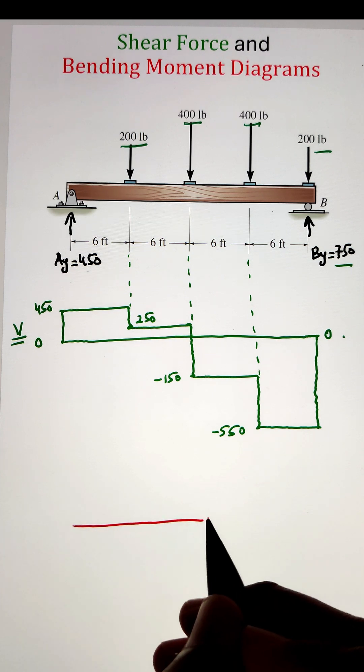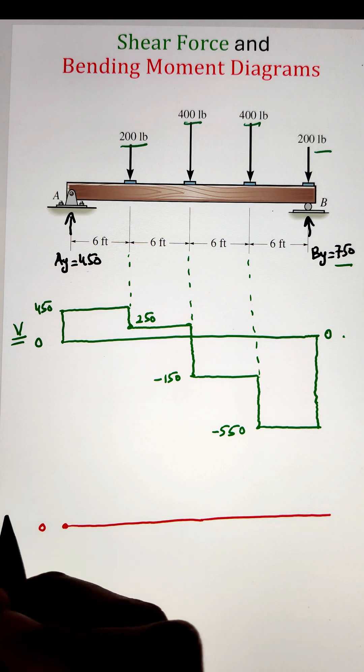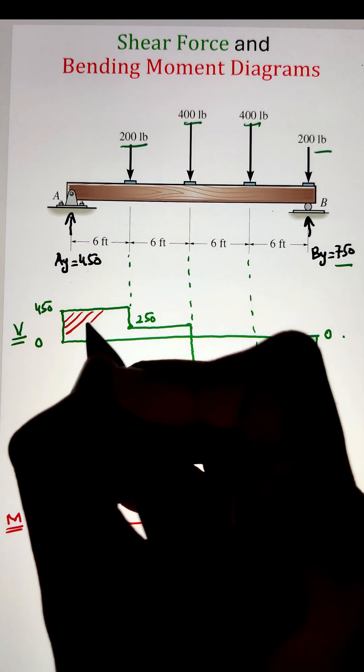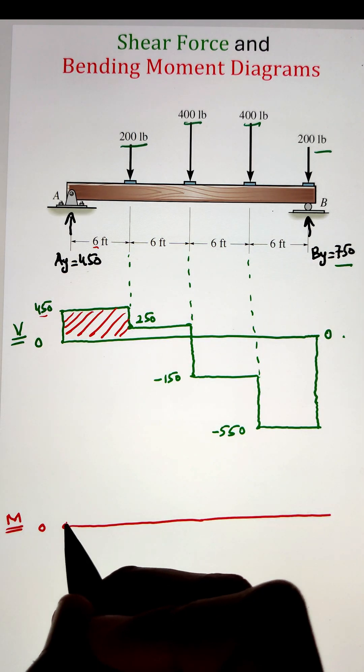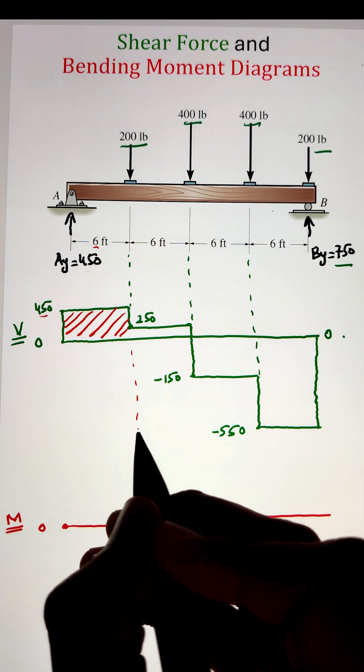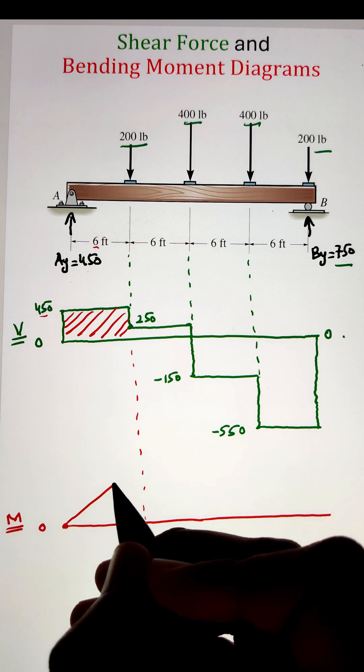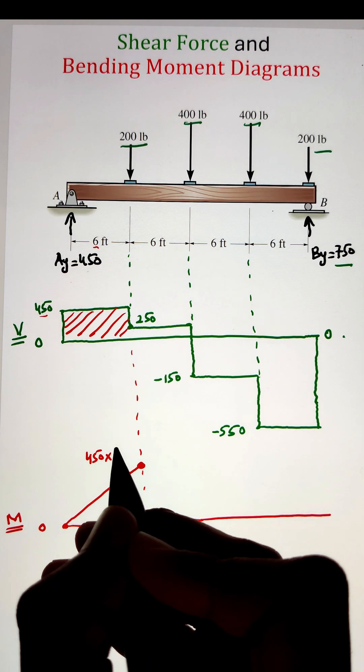So starting at point A, since there is no area at point A, we will start the bending moment diagram as 0 pound feet. Next, we have this rectangular area of 450 times 6. If we multiply them together, we get 2700. That will be the bending moment at the location where 200 pound load is being applied.